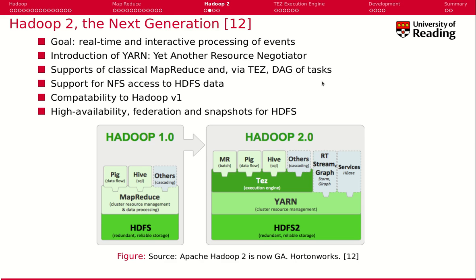Let's talk about Hadoop, the next generation of Hadoop 1. In Hadoop 1, we had two components: MapReduce and HDFS. And on top of these two components, we had built a lot of software that was data-intensive and wants to process data.